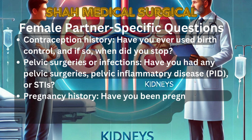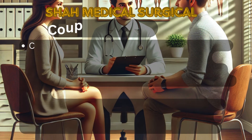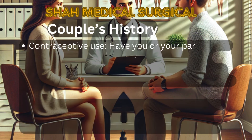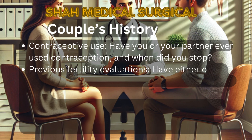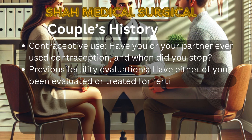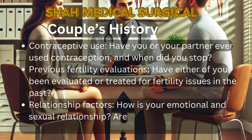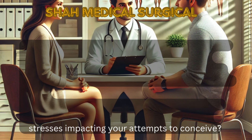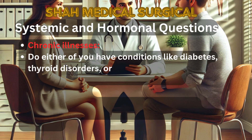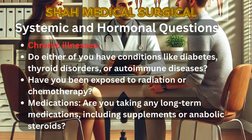Pregnancy history — have you been pregnant before? If yes, were there any complications like miscarriages or ectopic pregnancies? Couples history and systemic factors: ask about contraceptive use, previous fertility evaluations, and systemic conditions like diabetes or thyroid disorders, as well as lifestyle factors such as weight, diet, and exercise.